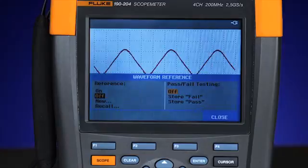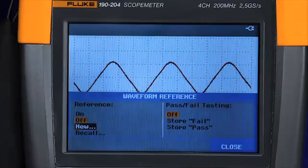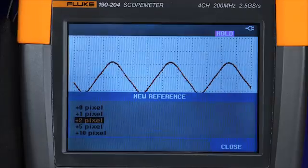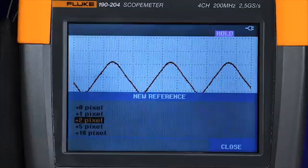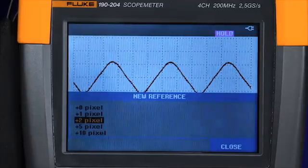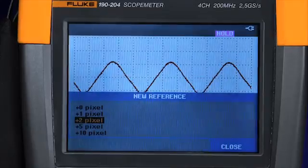In the waveform reference menu, choose a new reference envelope. Here is where you define the window of tolerance by the number of pixels. In this instance, we'll choose a relatively tight window by selecting plus two pixels around the known good waveform, then pressing enter.